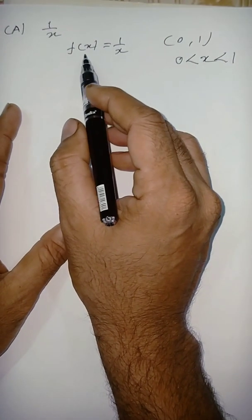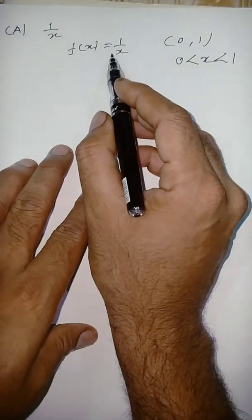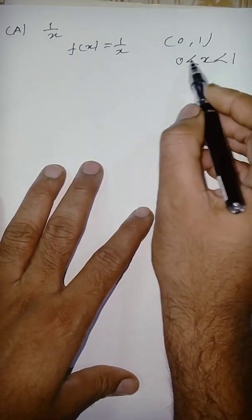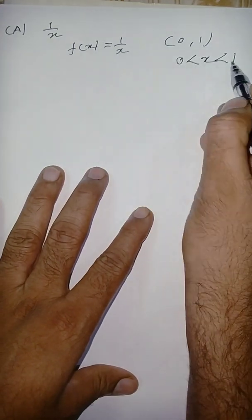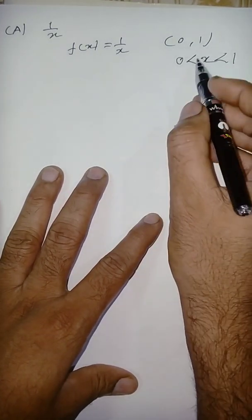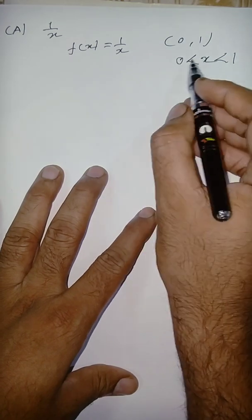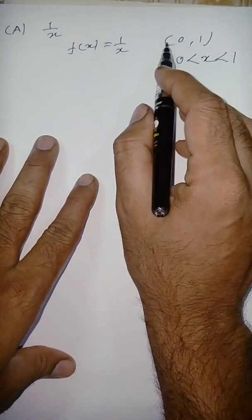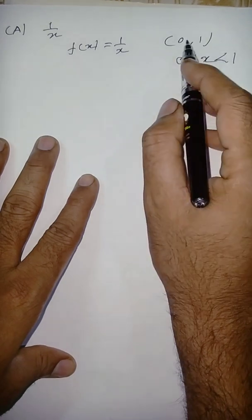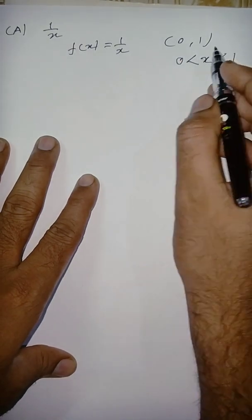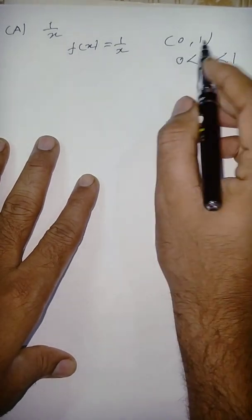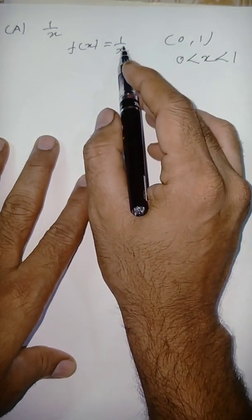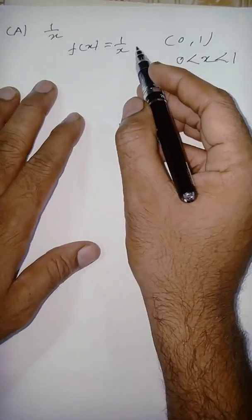The first function is f(x) = 1/x on the interval (0,1), written as 0 < x < 1. It is continuous on this open interval — in between 0 and 1, the function values exist.